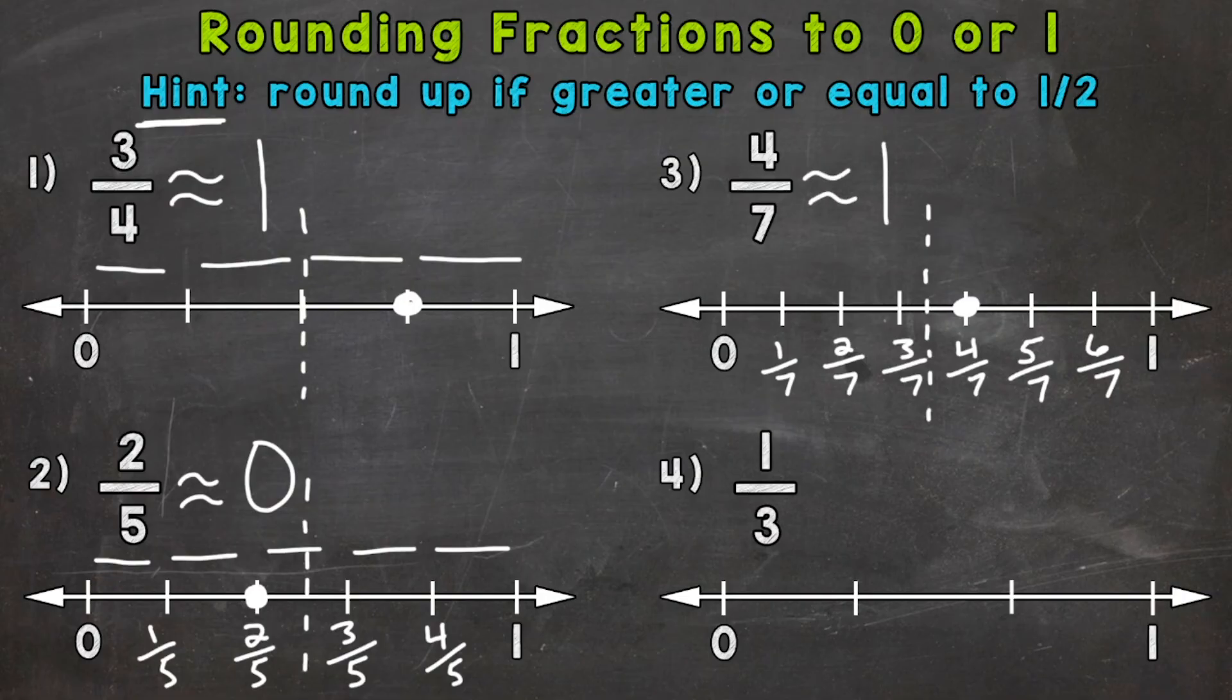And lastly, number 4, we have 1 third. So we have 1 third here and 2 thirds here. Let's place 1 third on our number line. And half of 3 is 1 and a half, so that's going to be right here. So we can tell that we are closer to 0. And 1 third is less than a half, so we round to 0.